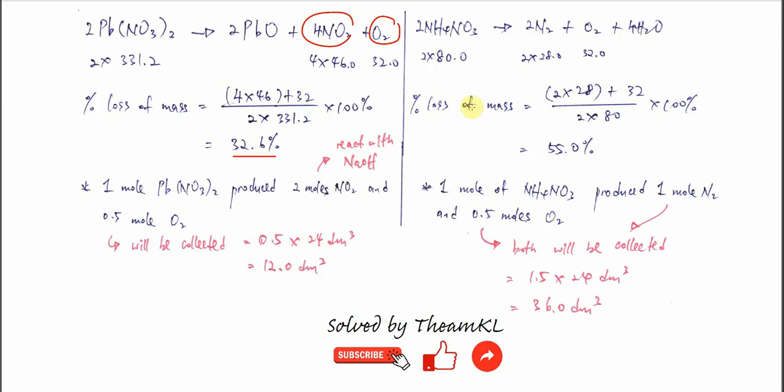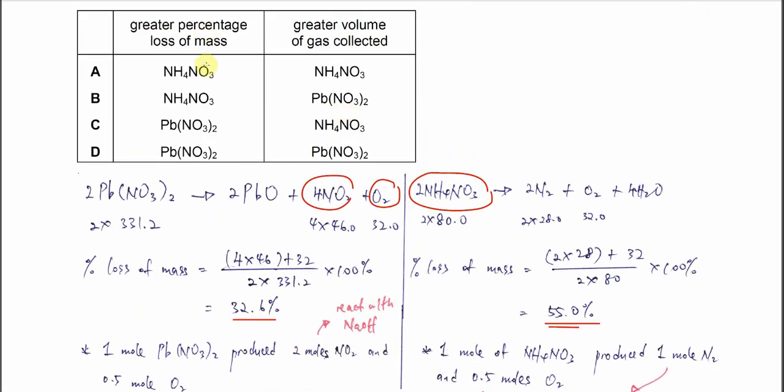Let's calculate the percentage loss of mass. We consider the gas products only. So it's two times 28, the molar mass of nitrogen, plus 32, the molar mass of oxygen, over two times 80, the molar mass of ammonium nitrate, times 100 percent. So it's 55 percent. The greater mass loss is the ammonium nitrate. So it's either A or B now.